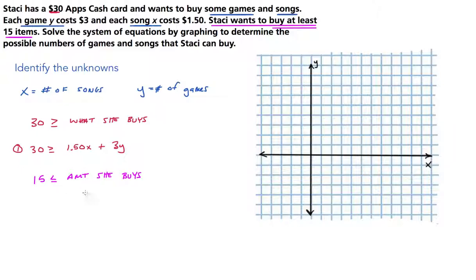So now we're going to replace that with the variables, because what she's buying is number of songs and games. The equation that we're going to write is 15 must be greater than or equal to X plus Y. The number of songs and the number of games must total equal to 15 or more. So we have our second equation.